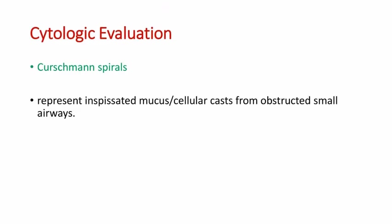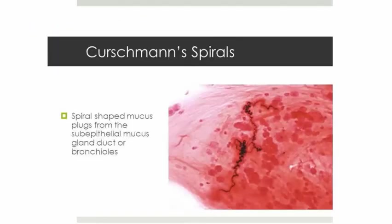Cytologic evaluation reveals a peculiar structure called Curschmann spirals, which represent inspissated mucus or cellular casts from obstructed small airways. You can see in this picture — they are spiral-shaped mucus plugs from the sub-epithelial mucus gland ducts or bronchioles. These are called Curschmann spirals and are a peculiar finding in lower airway obstruction disease.